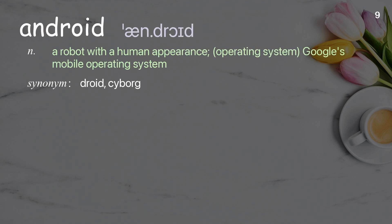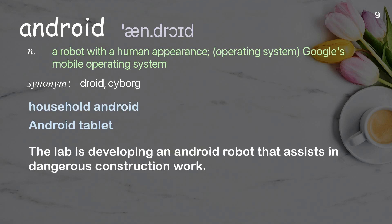Android: a robot with a human appearance; also refers to Google's mobile operating system. Examples: household android, android tablet. The lab is developing an android robot that assists in dangerous construction work.